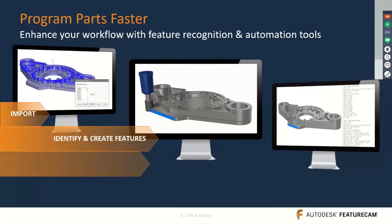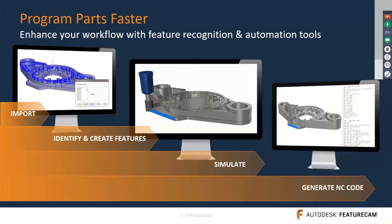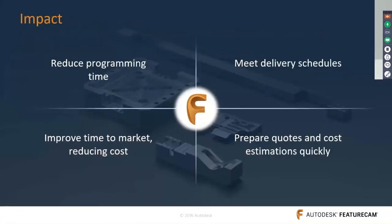FeatureCAM's workflow is an automated process, much simpler and shorter compared to traditional workflows. Traditional workflows are operation-based, but inside FeatureCAM you get feature-based programming. You import your model or draw geometry inside the software, FeatureCAM automatically identifies features and creates associative operations, then you simulate the features to validate the programming and the NC code is ready.